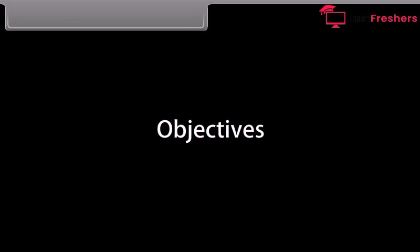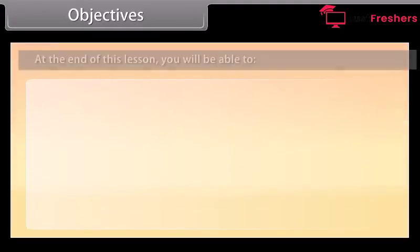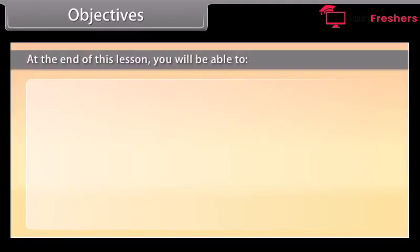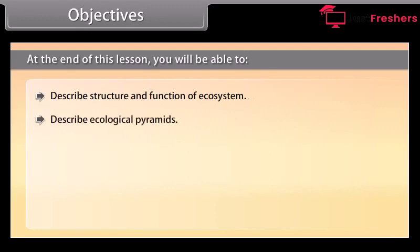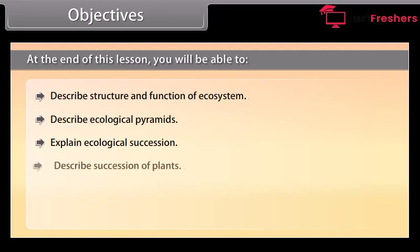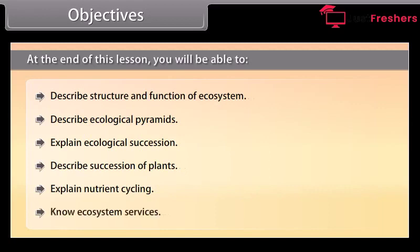Objectives. At the end of this lesson, you will be able to: describe structure and function of ecosystem; describe ecological pyramids; explain ecological succession; describe succession of plants; explain nutrient cycling; and know ecosystem services.